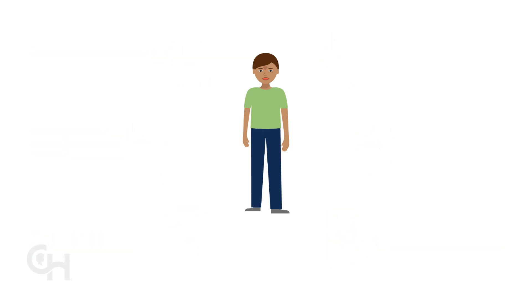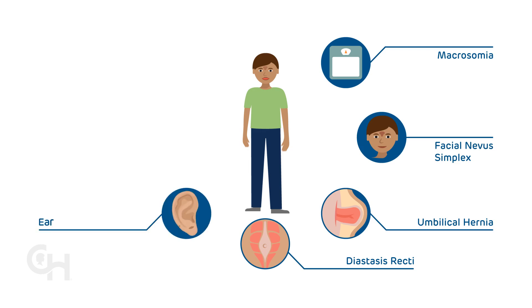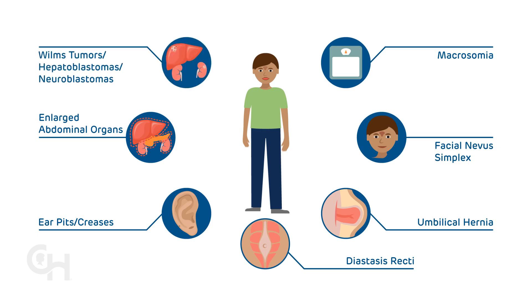The suggestive features include macrosomia, meaning large birth weight, facial nevus simplex, a facial birthmark, umbilical hernia, when part of the intestine pushes through and creates a bulge or sac in the weak spot of the belly button, diastasis recti, a weakening of the abdominal wall muscles, pits or creases in the earlobe or behind the ear, enlarged abdominal organs, when parts of the body such as the kidneys, liver and pancreas are larger than normal, isolated Wilms tumors, hepatoblastomas, and neuroblastomas.